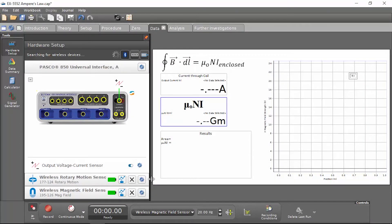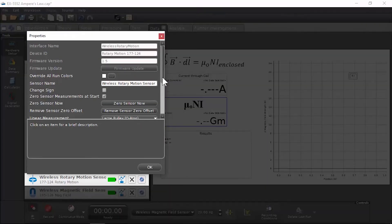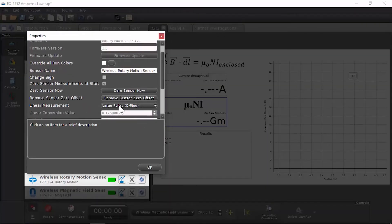Next step is for the Rotary Motion Sensor. We want to go to the Properties and ensure that the Linear Measurement is set to Large Pulley with an O-ring. Let's click OK.